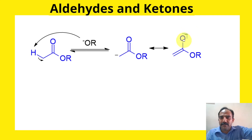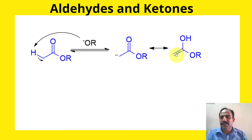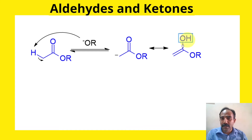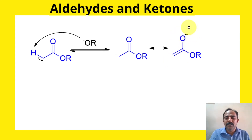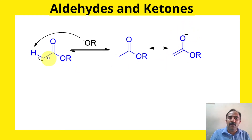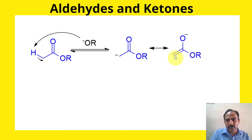If there were a hydrogen on the O minus — that is, if O minus were OH — then the species would be an enol: a double-bond species ('ene') plus an alcohol ('ol'). The negatively charged species is the enolate. So we've made an enolate from the ester. In Claisen condensation, this enolate will attack another ester molecule.